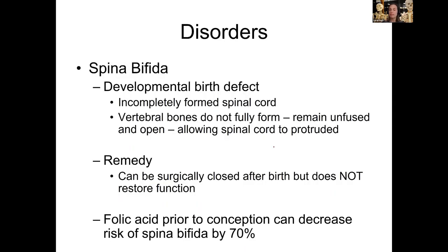Spina bifida is a developmental birth defect where the spinal cord does not completely form. The brain and spinal cord are among the first structures to develop in an embryo — usually before a person even knows they are pregnant.